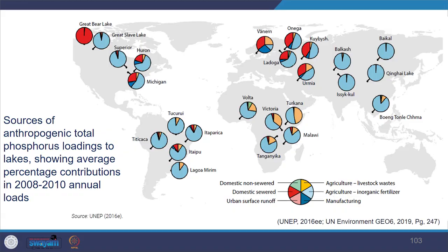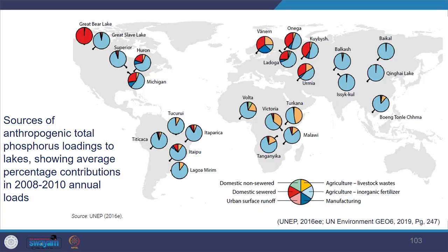In the image you can see anthropogenic total phosphorus loading into the five largest lakes by surface area in each of the five UN environment regions, showing average percentage contributions from 2008-10 annual loads — from manufacturing, agriculture, urban surface runoff and so on. Pay attention to the legend and look at how loading is distributed.